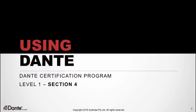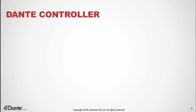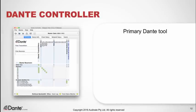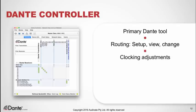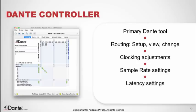This is part of the Dante certification program, level 1, section 4. Dante Controller is free software from Audinate that works with all Dante-enabled devices from any manufacturer. It is the primary tool used to set up and use all Dante networks — used to set up, view, and change audio signal routing, configure clocking, adjust individual device parameters such as sample rate, and monitor system health by observing actual latency behavior and clock quality.